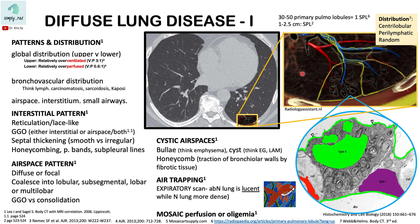Next, look at the distribution of lesions. Knowing the structures within the secondary pulmonary lobule allows you to predict what distribution the nodules will have. For example, if you have nodules distributed to involve the pleura and the fissures, that's going to be a nodule with a perilymphatic or random distribution.